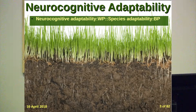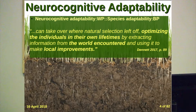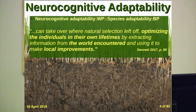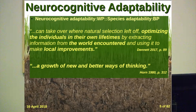Neurocognitive adaptability — the simplest explanation is using a little logic phrase like this. Neurocognitive adaptability is to within persons as species adaptability is to between persons. That's really what adaptability is all about. It takes over where natural selection leaves off. Neurocognitive adaptability optimizes individuals in their own lifetimes by extracting information from the world and using it to make local improvements on me. Or as John Horn said, it's a growth of new and better ways of thinking.